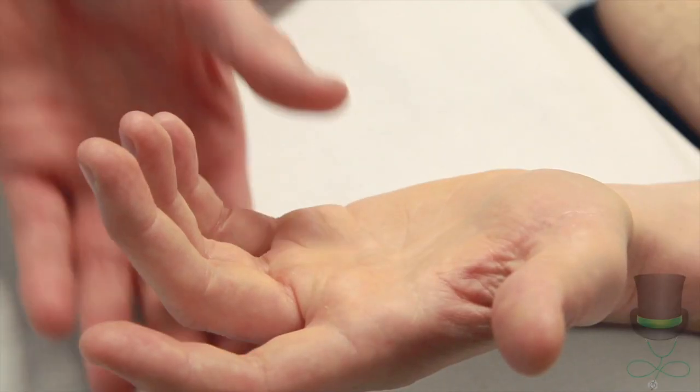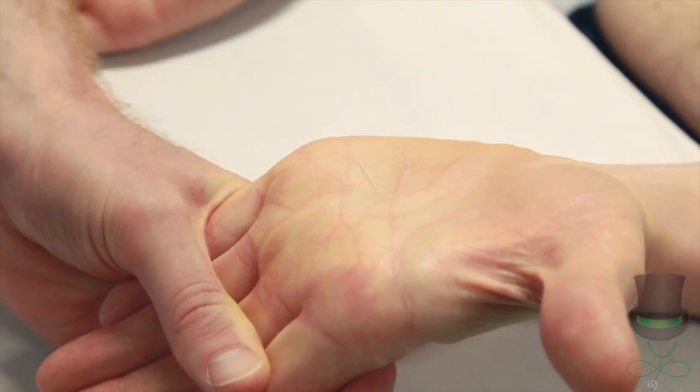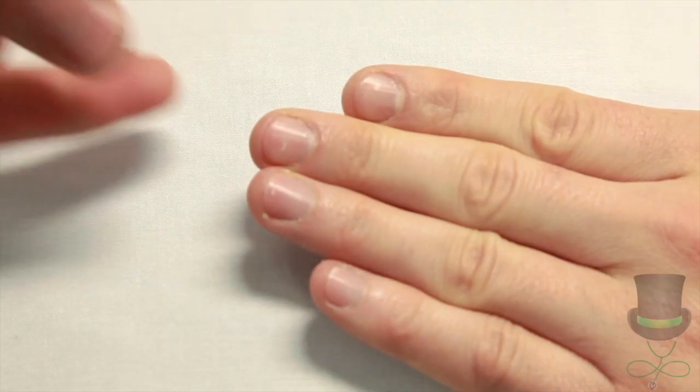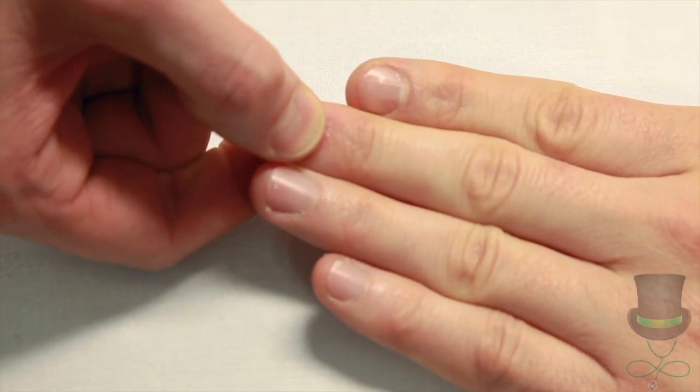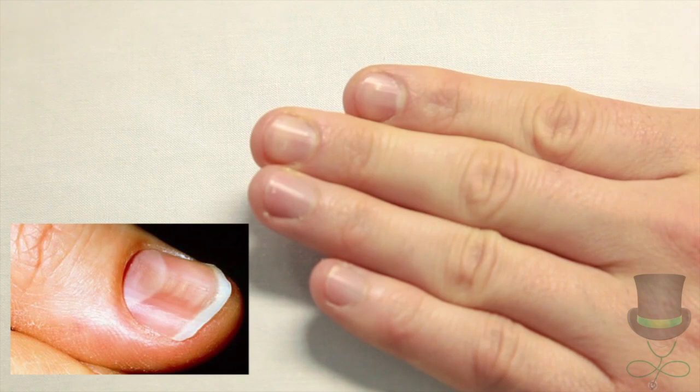Examine for the stigmata of anemia, such as general pallor, palmar crease pallor, delayed capillary refill, and coilonychia or spoon-shaped nails.